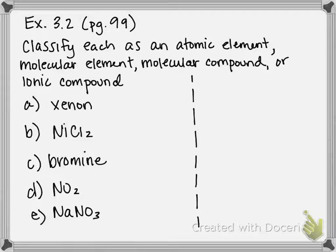So what we're going to do in this problem is, given a list of pure substances, by the end of this we'll be able to classify them as either an atomic element, a molecular element, a molecular compound, or an ionic compound, given parts A through E.